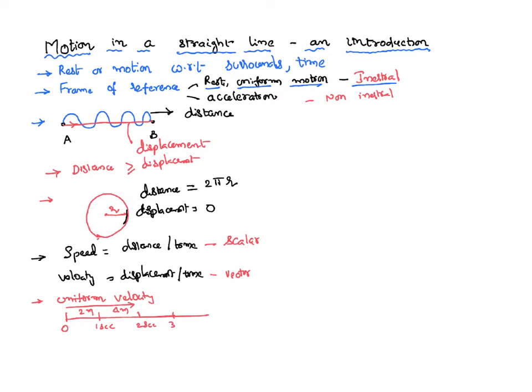In total 3 seconds it has covered 6 meters right from the beginning — again velocity is 2 m/s. This kind of velocity is called uniform velocity. And if that is not the case, then the body is said to be in a non-uniform velocity.